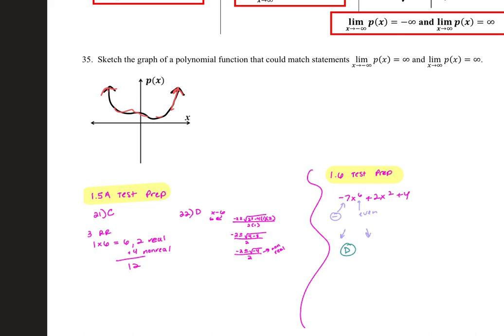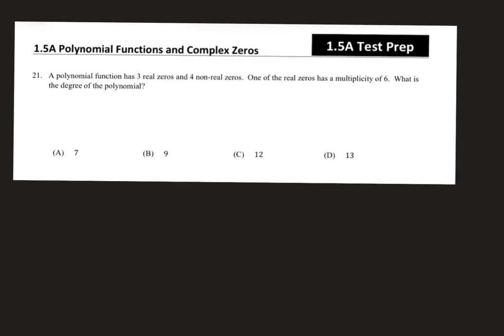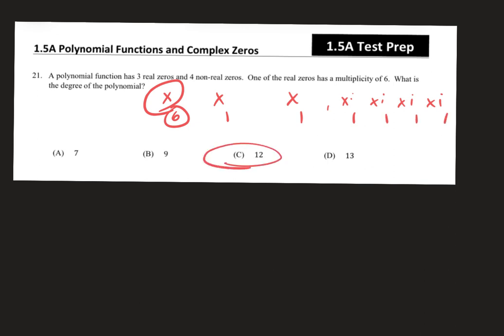I'm still confused on problem 23. It says a polynomial function has three real zeros, four non-real zeros, and one of the real zeros has a multiplicity of six. What's the degree? If it has three real zeros plus four non-real, and one of those real zeros has a multiplicity of six, that gives you six plus one plus one plus four equals twelve total roots. So the degree is twelve.